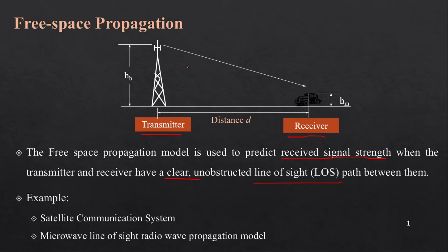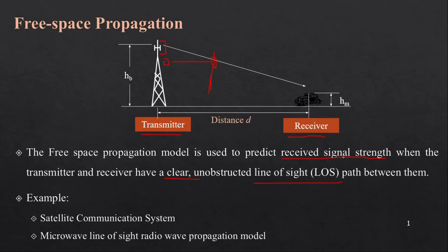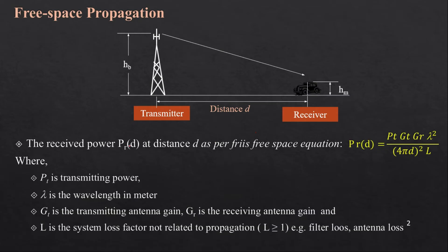As mentioned in the first lecture of this series, in a cellular system at a mobile tower we have two types of antennas: radio wave antennas and microwave antennas. Microwave antennas communicate with each other between cellular towers, so there will always be a line of sight between two mobile towers. We will see how to calculate the received signal strength for free space.